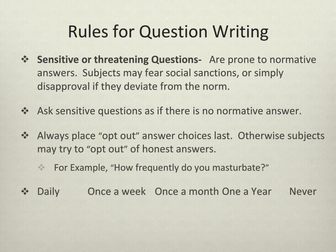Sensitive or threatening questions are those for which individuals may fear social sanctions or disapproval if they deviate from a norm. The key to asking good sensitive or threatening questions on a survey is to ask them in a way that implies there is no normative answer — there is no normal. One way to do this is to always place answer choices that uncomfortable individuals will choose last, so they have to read all the other answer choices first. For example, if you're conducting a survey on sexual behavior and asking how frequently individuals masturbate, you would want NEVER to be the last answer and start with the most frequent answer.